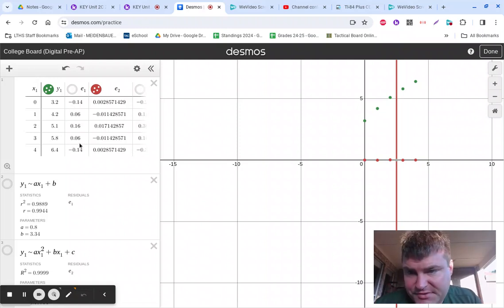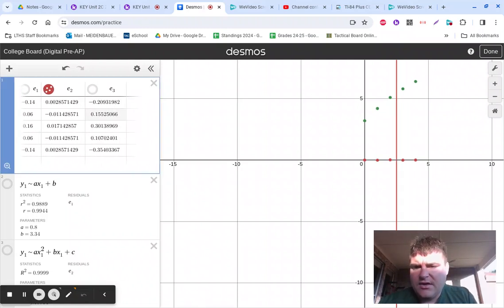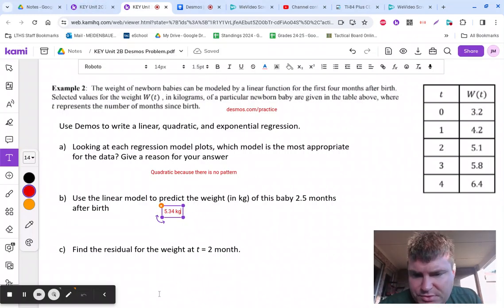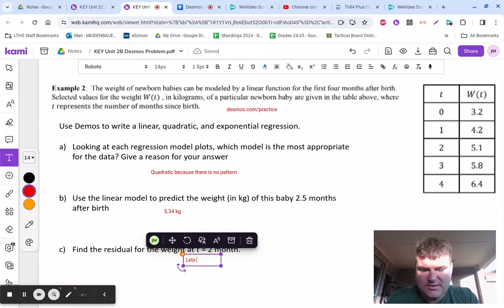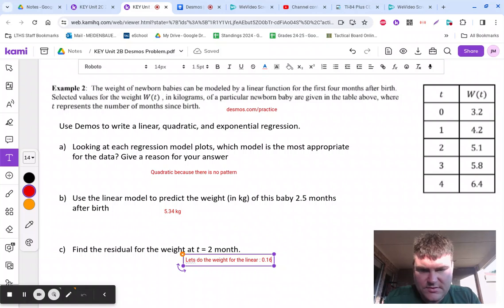Residuals is really nice because these are the residuals. Like E sub 1 is all the residuals at the linear one. All the residuals for the quadratic are E sub 2, and same thing for E sub 3. The question is specifically asking for the residual for the weight at T equals 2 months. Let's go ahead and add in the weight for the linear. For the linear at 2 is 0.16. What you're literally doing is just reading.